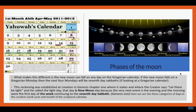What makes the difference is that the new moon can fall on any day on a Gregorian calendar. If the new moon falls on a Gregorian Monday, then the next four Sabbaths will all fall on Mondays. But the new moon sets the day on the Father's calendar in the heavens. When we look at the paper calendar, the Gregorian calendar floats — the Father's calendar does not float.